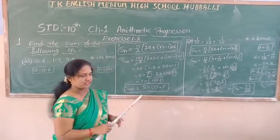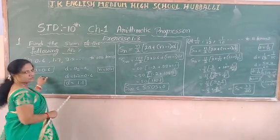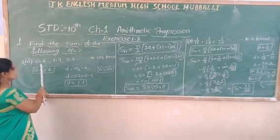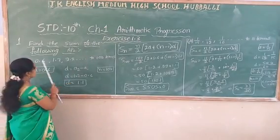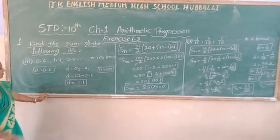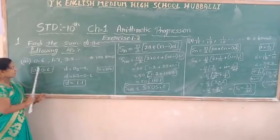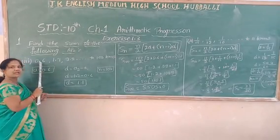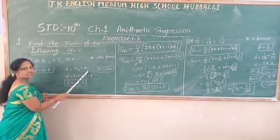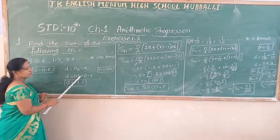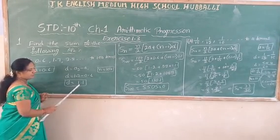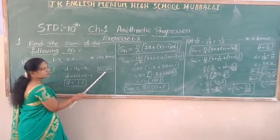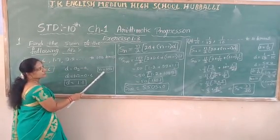Now the third question, continuing, I am going to do the same method but the terms are in decimal form. Be careful when the terms are in decimal form. First term a equals 0.6. D value: second term minus first term, that is 1.7 minus 0.6 gives d equals 1.1. And sum of 100 terms means n equals 100.